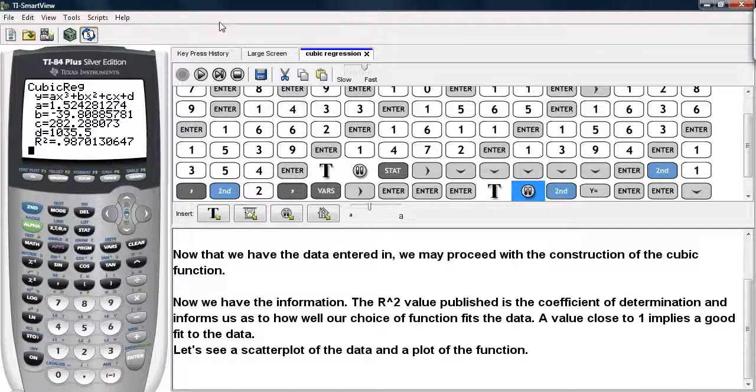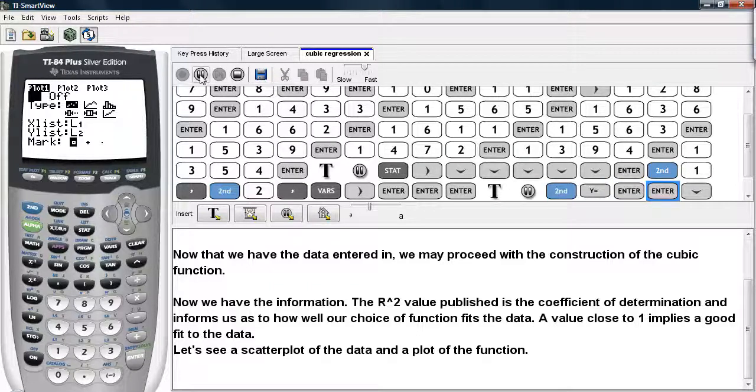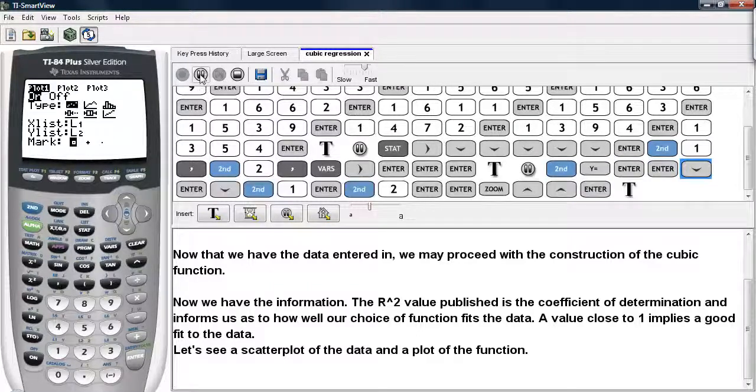Now, let's see a scatter plot of this data and a plot of our function. We'll go ahead and hit second and Y=. That brings up the stat plots. We'll go ahead and select the first one and turn it on. We'll select the scatter plot option. The x-list was L1. The y-list was L2. And we'll use boxes for the mark, so it's pretty easy to see.